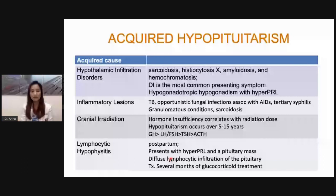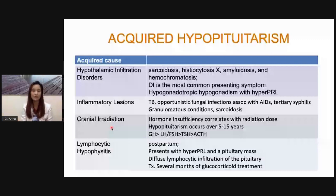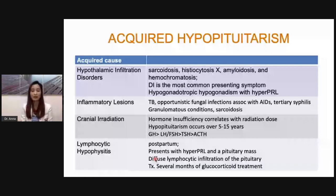The different causes of acquired hypopituitarism include hypothalamic infiltrative disorders, inflammatory lesions, and infectious causes such as cranial irradiation. For example, radiation received early in life for a brain tumor — 5 to 15 years later — can result in hypopituitarism following the known pattern of hormone loss. You can also have lymphocytic hypophysitis, an autoimmune disorder that usually develops after delivery.